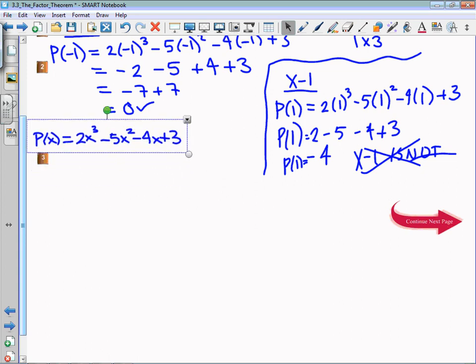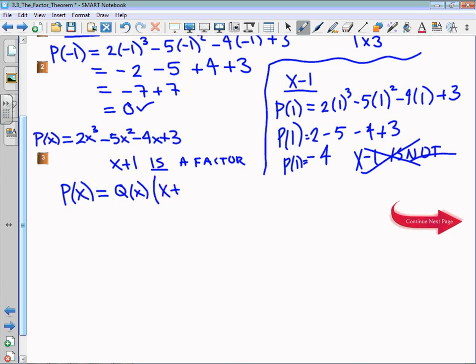We know P(x) is equal to 2x³... that was given to us in the question. And we know that x + 1 is a factor. What we need to determine is we know that P(x) can be written as the quotient of the division when I would divide by x + 1. And I want to write this because it's important to see this manipulation.